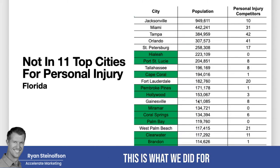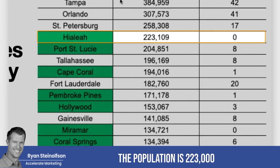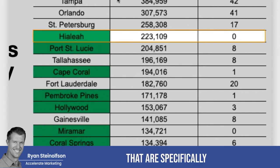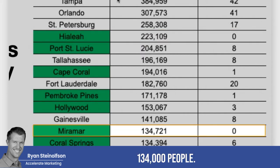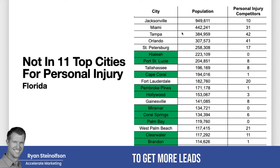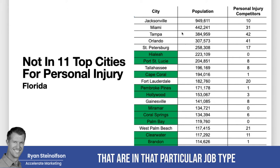I'm going to show you — this is what we did for Southern California, and the same thing we did for Florida, and this is for PI. You'll notice that in Hialeah, the population is 223,000 — almost a quarter million people — and there are no PI attorneys specifically in the PI vertical that have set up Google local service ads there. Same thing with Miramar: zero competitors, 134,000 people. It only makes sense to target the cities that have the largest population and the lowest number of competitors in that job type.